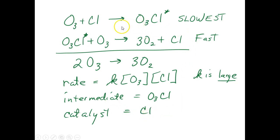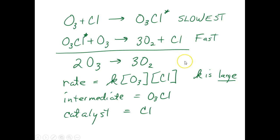Look at the difference between an intermediate and a catalyst. The intermediate appears on the right the first time it shows up, and then it's on the left getting eaten up so it's gone at the end. The catalyst appears on the left the first time, and then later it appears on the right. They both cancel out and aren't found in the overall reaction, but the catalyst gets eaten up first and then is reproduced, while the intermediate is first produced and then eaten up. Make sure you've got them straight.